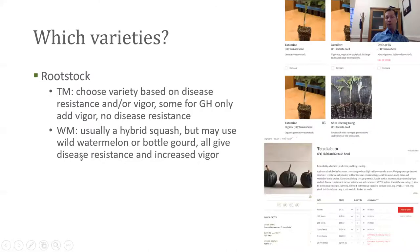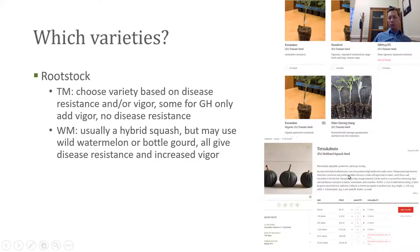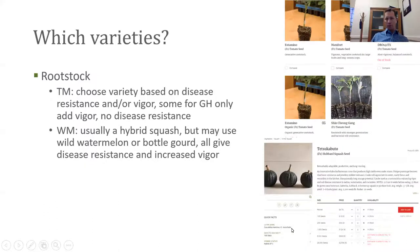For watermelon, the rootstock is usually a hybrid squash. There are some new rootstocks coming on the market — one I've worked with previously is actually a wild watermelon; you can also graft on bottle gourd, though that's less common. Most of the time we are grafting on a hybrid squash. One example from Johnny's is a variety called Tetsukabuto, which is a hybrid between Cucurbita maxima and Cucurbita moschata. Most rootstocks are of this hybrid parentage, and all of these give disease resistance and increased vigor.